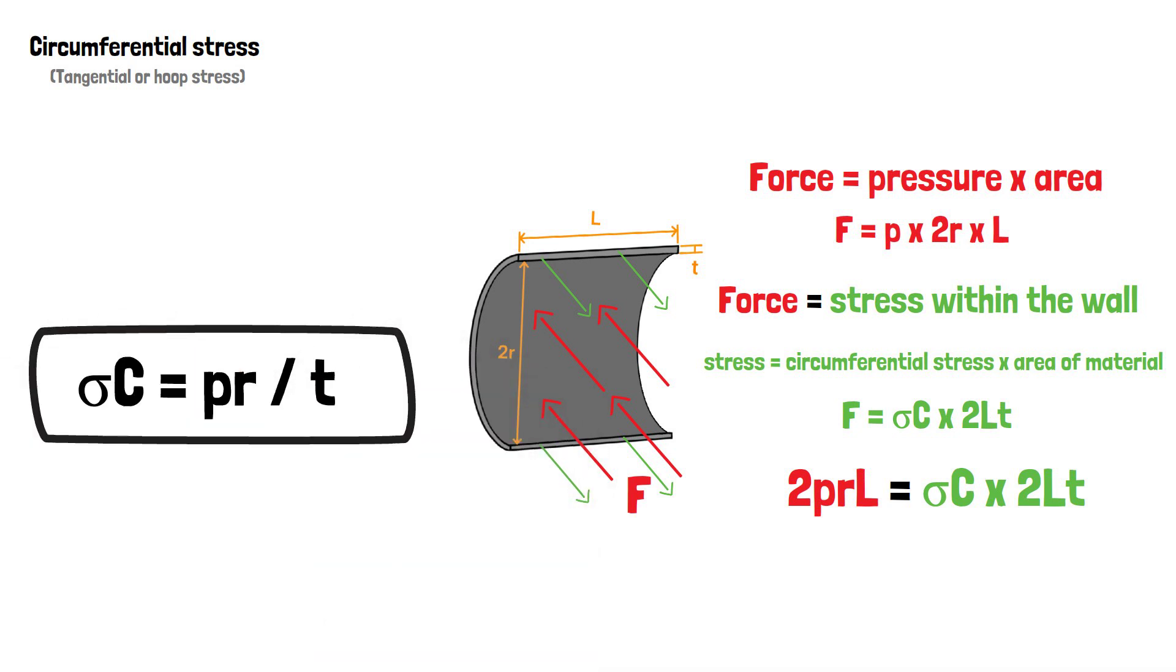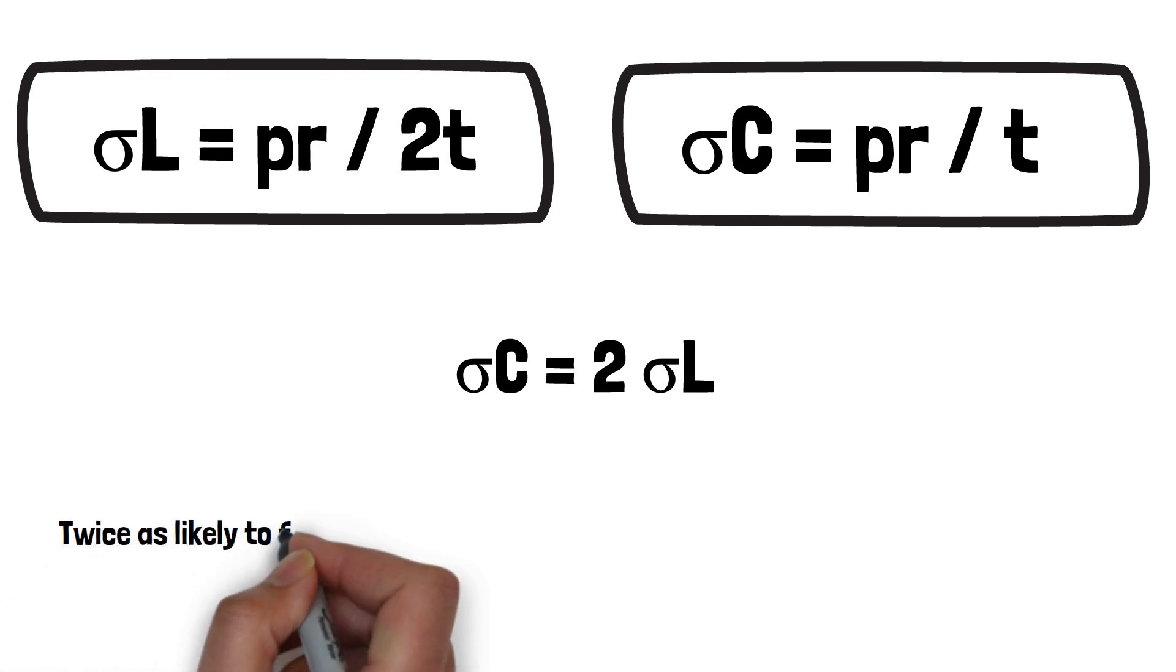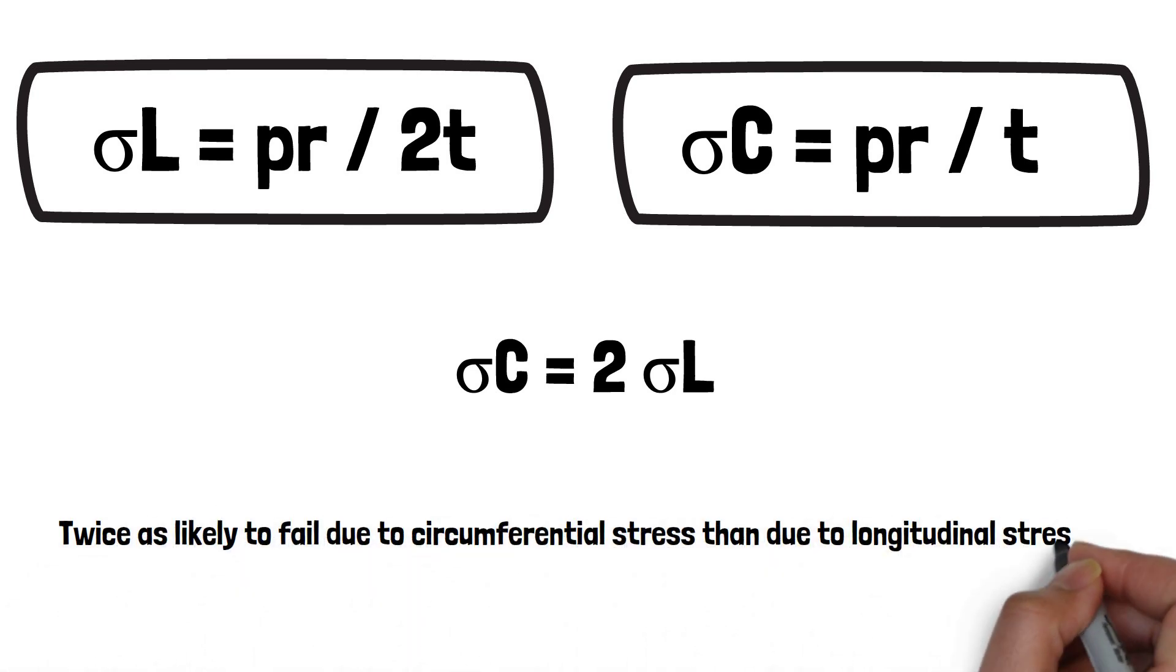It follows that from our two equations, we find that circumferential stress is twice the magnitude of the longitudinal stress, and therefore a thin walled cylinder is twice as likely to fail due to circumferential stress than due to longitudinal stress.